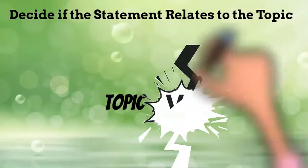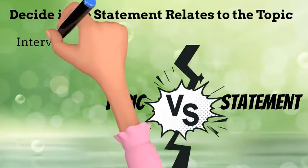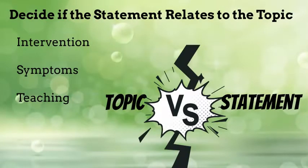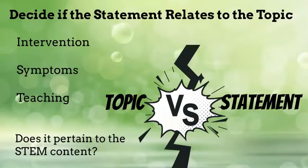Next, we start looking at each statement and decide if it relates to the topic. We need to look for clues in the topic. If the topic is about preventing complications, then the statement has to have a nursing intervention that prevents complications. If the stem of the question is asking for a symptom, then the statement has to include a symptom. Stem asking for patient teaching? If the statement doesn't include some form of teaching, we have to eliminate it. So we can rule out whatever doesn't match right away, and the further we whittle down the number of possible correct statements, the better.